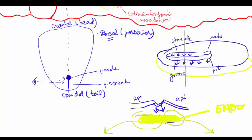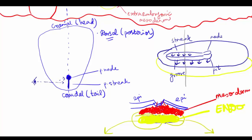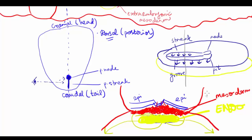While cells from the primitive streak continue migrating downwards, the cells that are migrating this time settle in between the endoderm and the epiblast. This layer is known as the mesodermal layer — it is the most prolific layer and gives rise to a lot of things in the body. This layer spills out of the sides of the embryonic disc to connect with the extra-embryonic mesoderm.